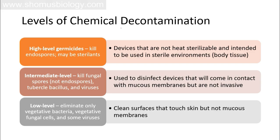Regarding the level of chemical decontamination: high level germicides can kill endospores and may act as sterilants. Intermediate level germicides kill fungal spores, tubercle bacillus, and viruses, but cannot kill endospores. Low level germicides eliminate only vegetative bacteria, vegetative fungal cells, and some viruses — they cannot kill any spores.